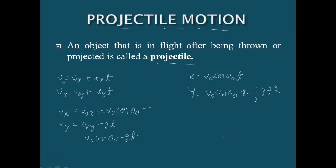Notice that the choice of mutually perpendicular x and y directions for analysis of projectile motion results in a simplification. One component of velocity — the x component — remains constant throughout the motion, and only the y component changes, like an object in free fall in the vertical direction.